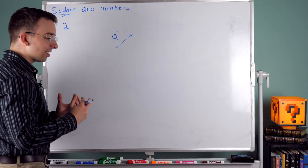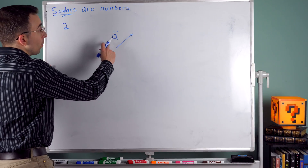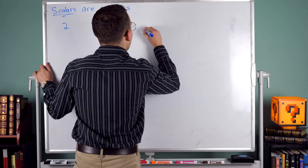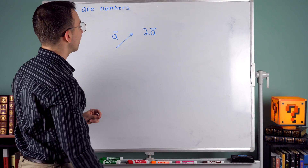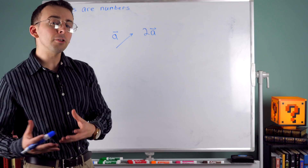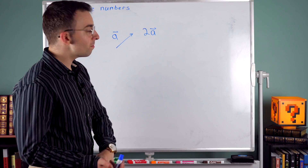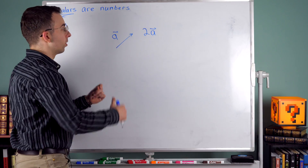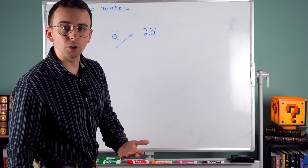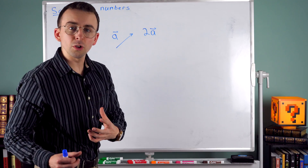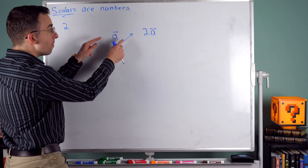We can multiply scalars by vectors. So if this is our vector A, what do you think two — the scalar two — times the vector A is? A scalar just has magnitude; it doesn't have direction. So this scalar multiplication shouldn't change the direction of the original vector A. But what it will do is double the magnitude. We're multiplying by a scalar of two, so the magnitude of 2A will be two times the magnitude of A.